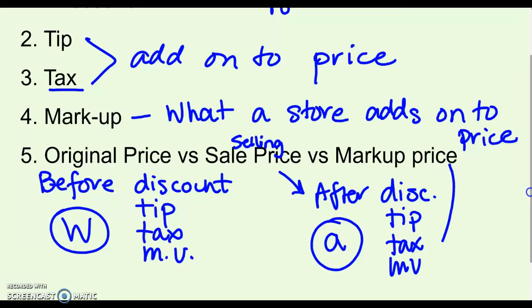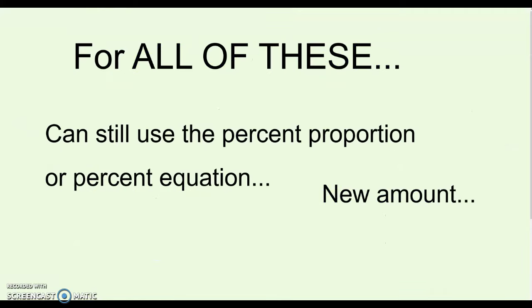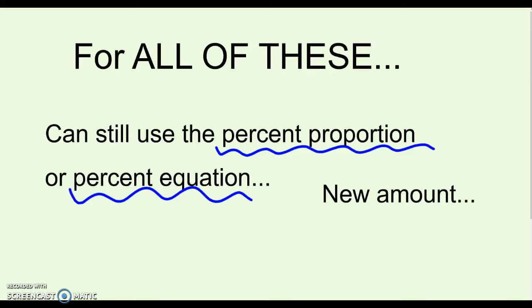The markup price is like a selling price — after they mark it up, what are they going to sell it to the customers for? For all of these problems, we can still use the percent proportion and the percent equation. We're also still going to see some problems where it says find the new amount, which we already know how to do from section 6.5. So a lot of this is just putting together stuff we've already done, all in terms of money problems.